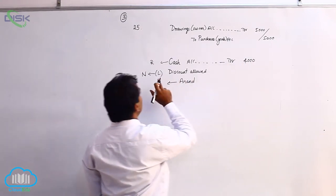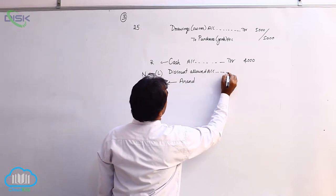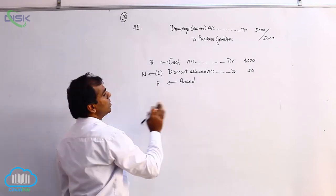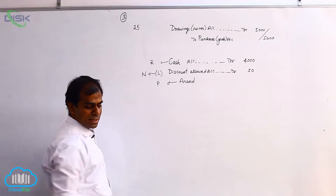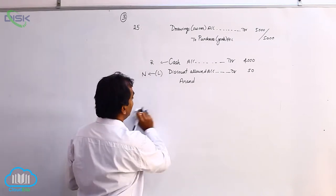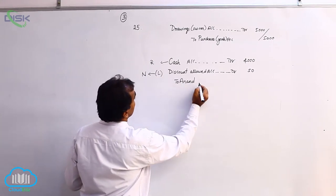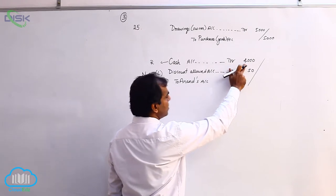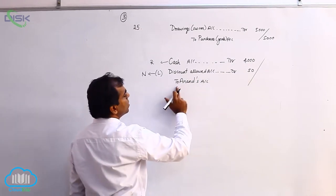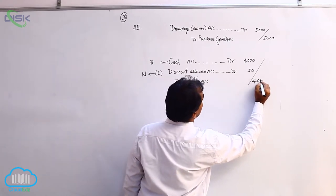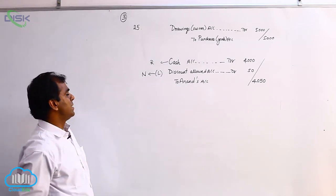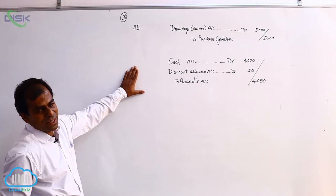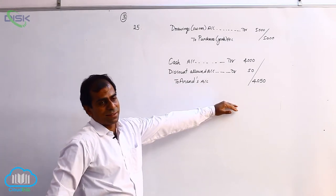You are giving him a concession of 50 rupees. This concession of 50 rupees is a loss to you. Based on the rule of nominal, we are debiting the loss — 50. Who is giving us this money? Anand is giving, and Anand is a personal account. Therefore, the personal account rule of credit the giver — we will apply for Anand and credit his account. The journal entry is: cash account debit 4000, discount allowed account debit 50, to Anand's account 4050. This is a compound journal entry. Narration: being cash received from Anand and discount allowed.